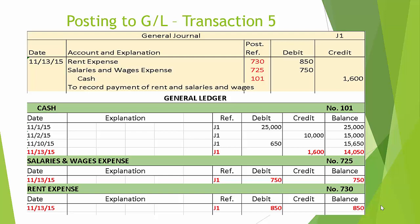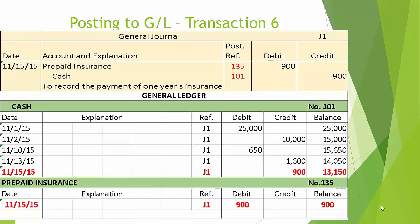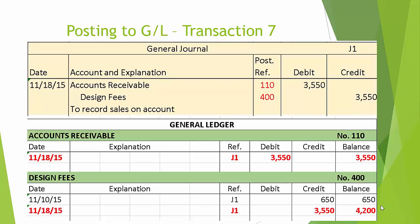Transaction number six: the debit to prepaid insurance is posted to general ledger account 135, and the credit to cash of 900 is posted to general ledger account 101. You see the date, the reference J1, a credit of 900. A credit to cash reduces cash. So if we take the previous balance of 14,050 and subtract 900, we arrive at a new ending cash balance of 13,150 — a debit balance.